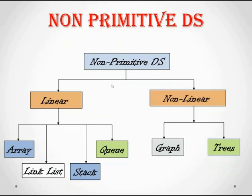Graph and tree are similar in many ways, but the major difference is that a graph can have a cycle, whereas a tree does not have any cycle. A cycle in a graph means that starting from a node, you can end up back at the same node. These are the classifications of non-primitive data structures.